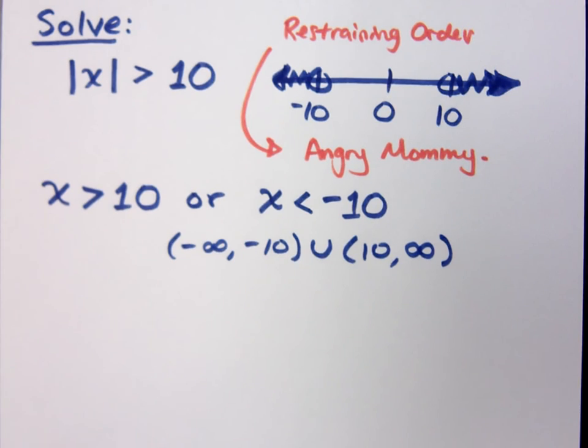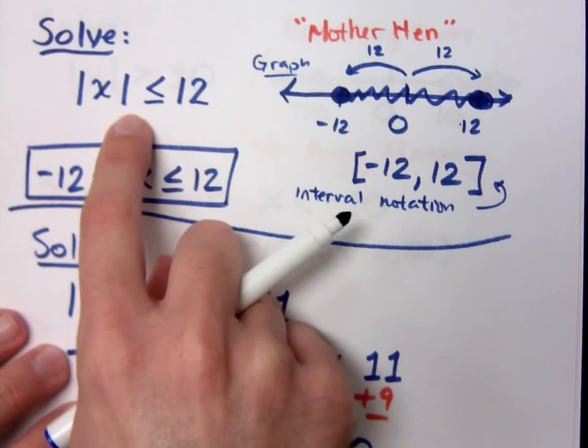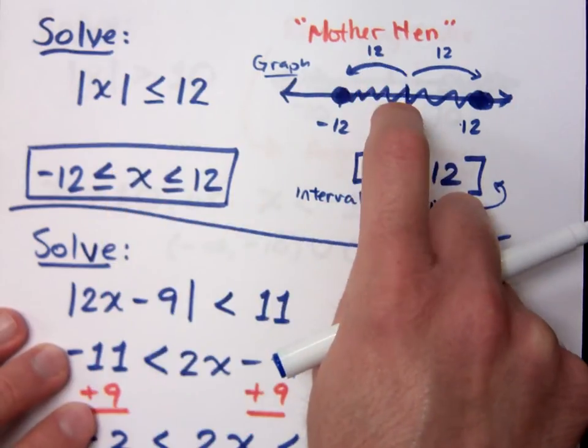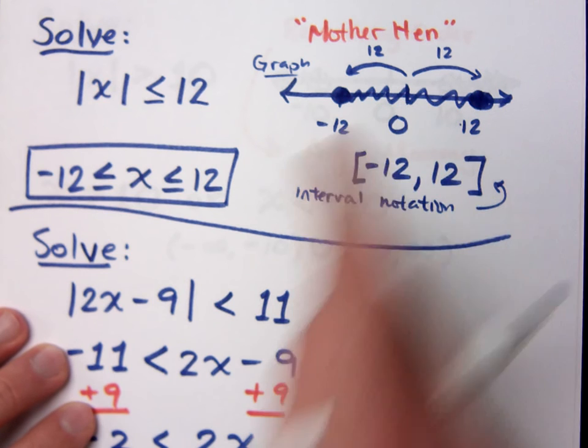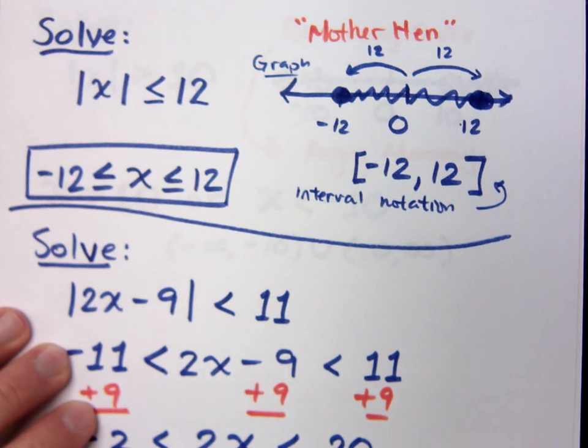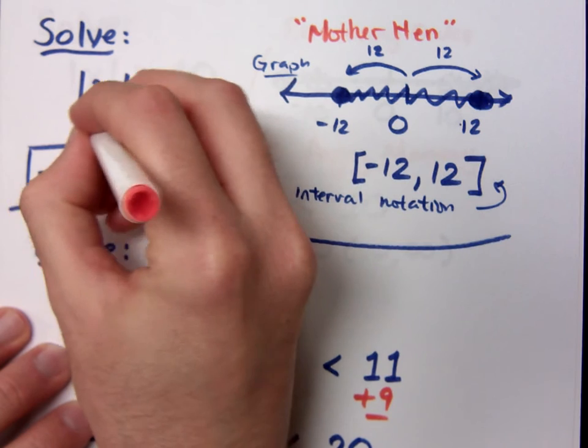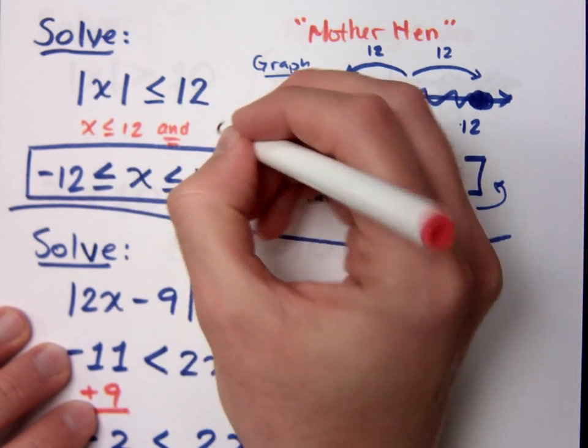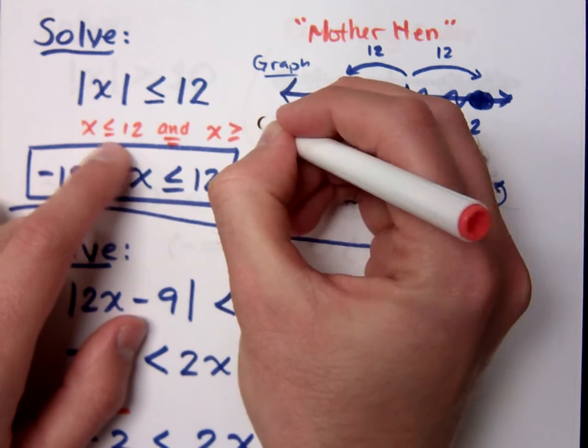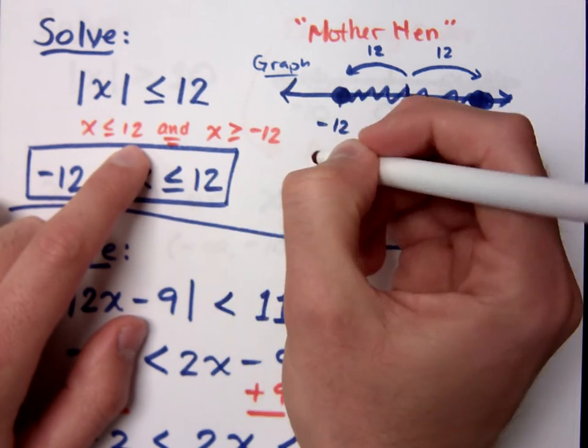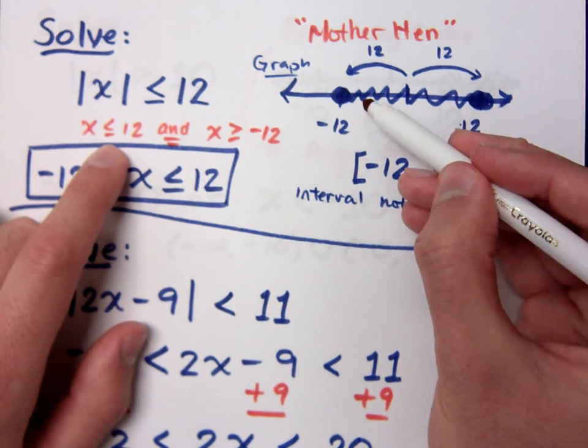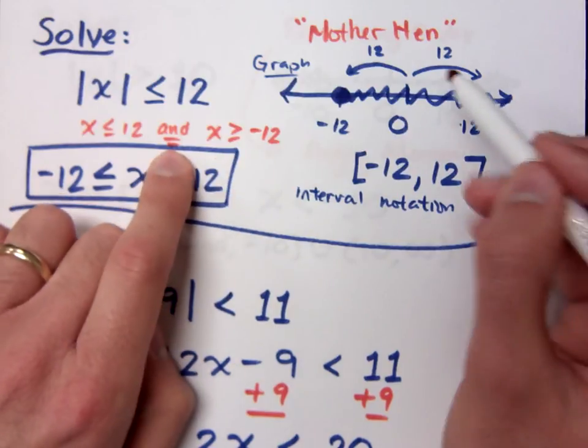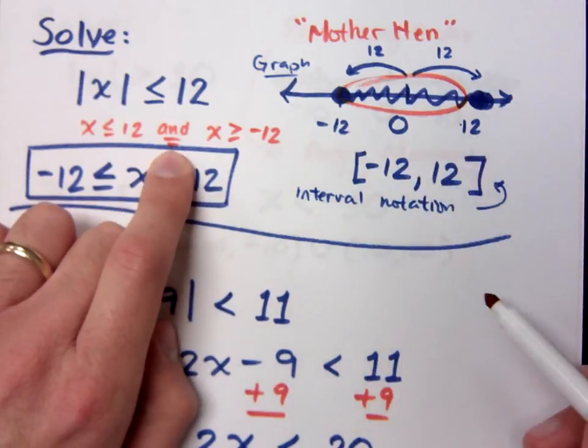On the last problems that we had right here, this was less than or equal to. It was the mother hen. And basically this was, even though we didn't write it that way, this was an intersection. This was the intersection of x is less than or equal to 12. And flip this guy so it's greater than or equal to, change this sign that's negative 12. Where are you less than negative, or where are you less than 12 and greater than negative 12? And it was all this stuff there in the middle.